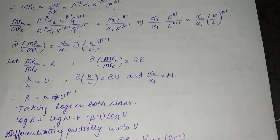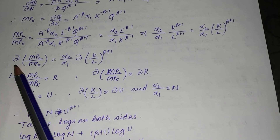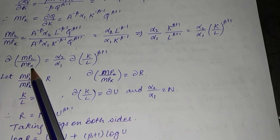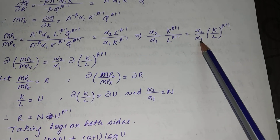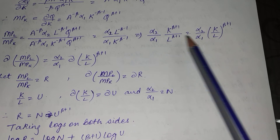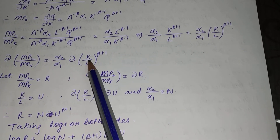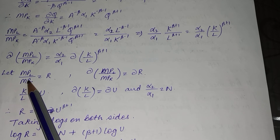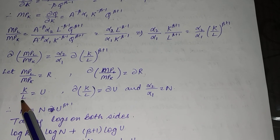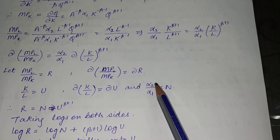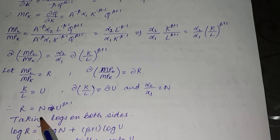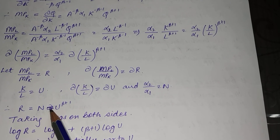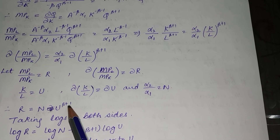Now we assume some substitution variables. The partial derivative of marginal productivity of labor upon marginal productivity of capital equals α₂/α₁, and since α₂ and α₁ are constants they are taken out. Let the ratio of marginal productivity of labor to marginal productivity of capital be R, let the capital-to-labor ratio K/L be U with derivative dU, and let α₂/α₁ be N. Therefore, the entire expression can be written as R = N · U^(β+1).